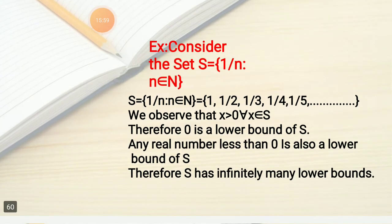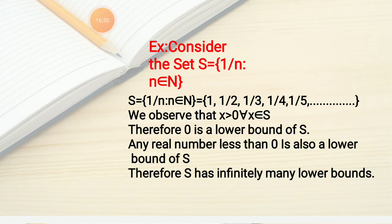Again, for S = {1/n : n ∈ N} = {1, 1/2, 1/3, 1/4, 1/5, ...}: all members of S are positive numbers, so X > 0 for all X ∈ S. Therefore 0 is a lower bound of S, and S is a bounded below set. Any real number less than 0 is also a lower bound, so S has infinitely many lower bounds.